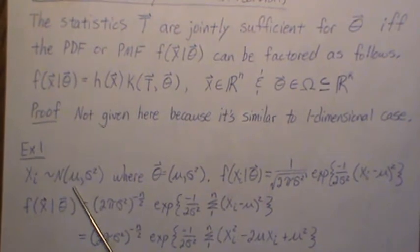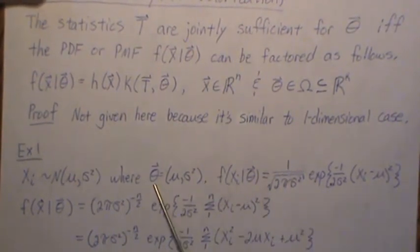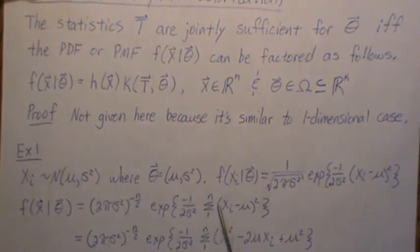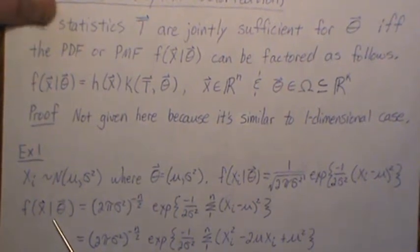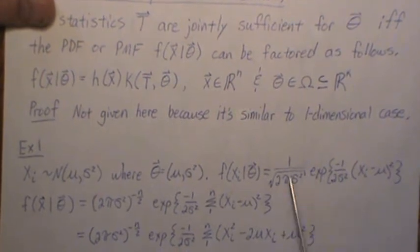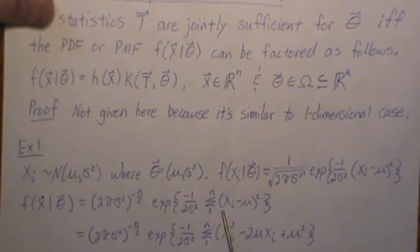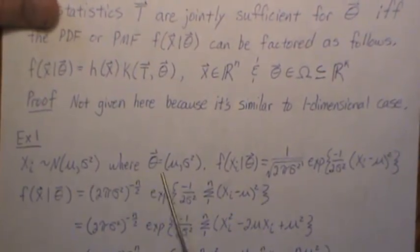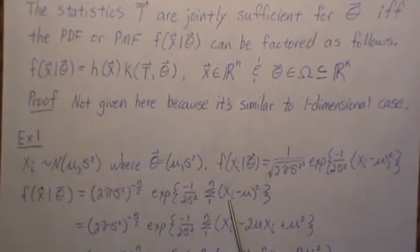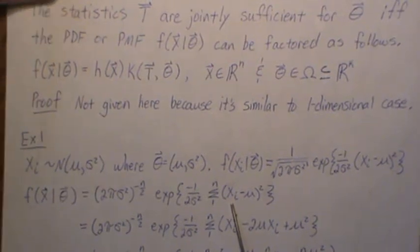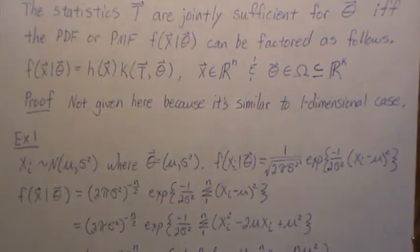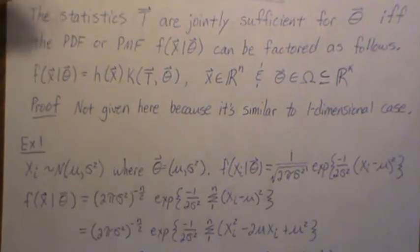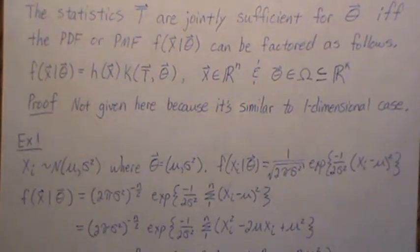Let Xi be normal with mean mu and sigma squared, so theta is a vector of size two: mu and sigma squared. The density for a normal distribution gives a joint distribution that is the product of all n terms, and adding the exponents gives a combined expression. Leaving it as is implies the order statistics are sufficient for mu and sigma squared, which is true — but can we do better? Sufficient statistics are about data reduction and compression, finding one or two statistics that summarize the data without losing information for estimating the parameters.